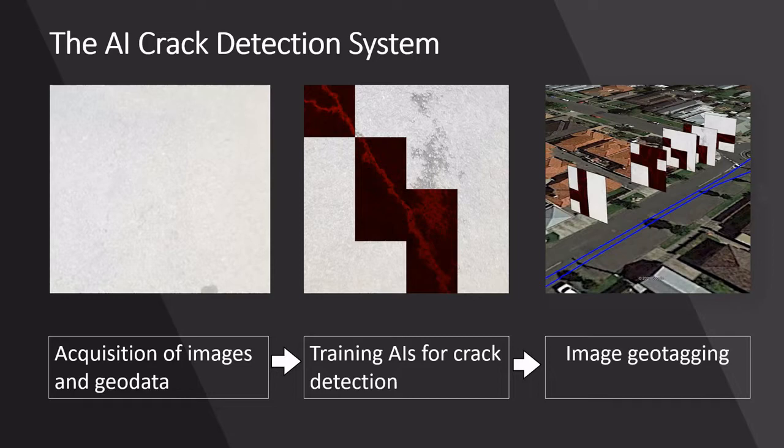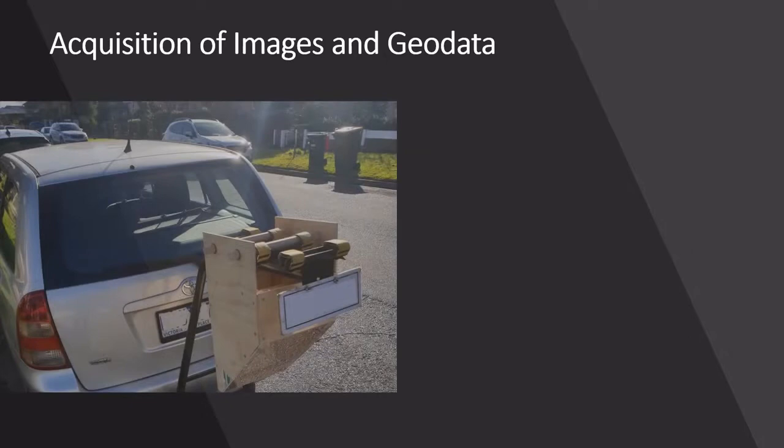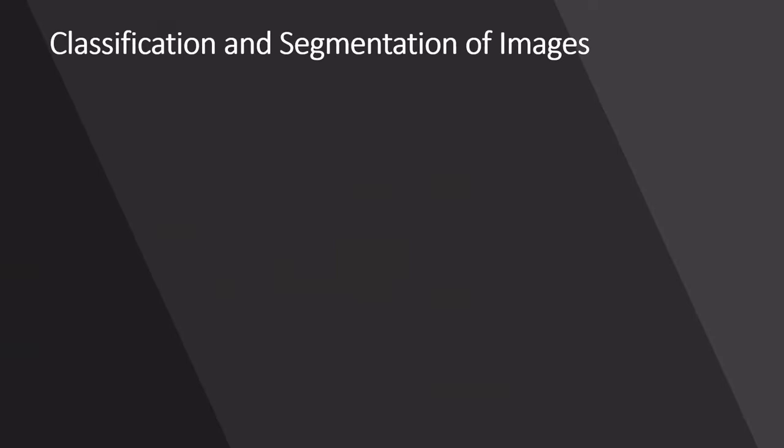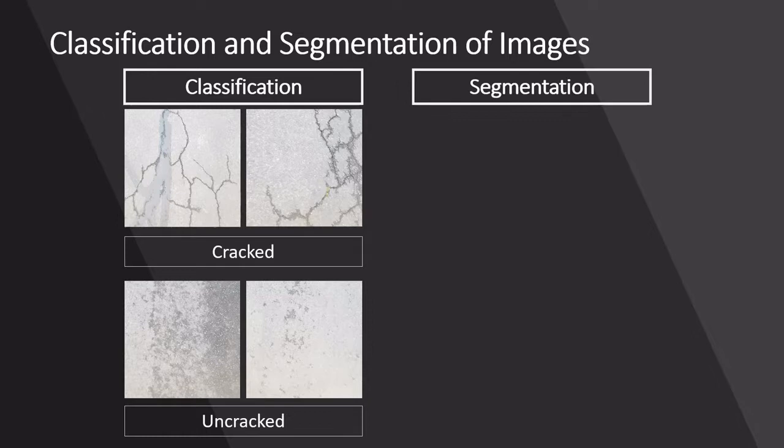Images and geodata were first obtained using a custom-built experimental setup attached to a vehicle's bike rack. The captured images were then classified as cracked or non-cracked, as well as segmented as alligator, irregular, or linear cracks.